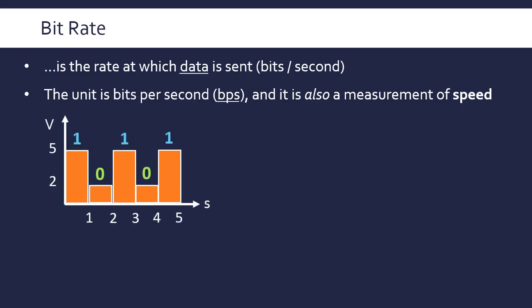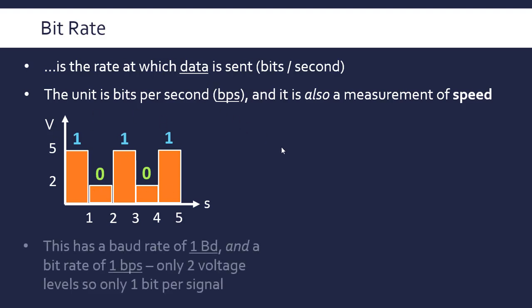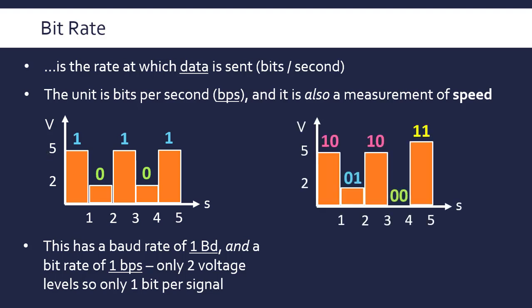If we're assuming that five volts represents one and two volts represents zero, we can look at what the bit rate means in relation to the baud rate. Here, this has a baud rate of one, changing once a second, one pulse a second, but it's also got a bit rate of one bits per second because we've only got two voltage levels to play with.